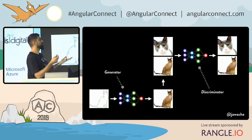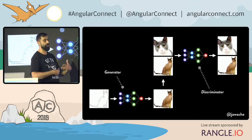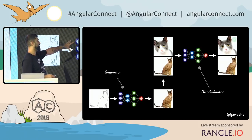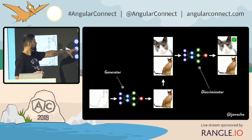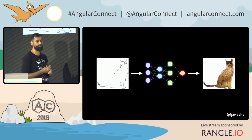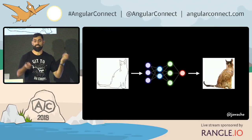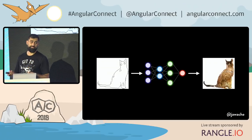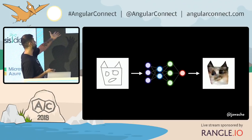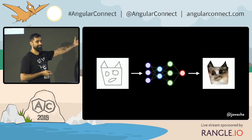And you keep doing that, over and over. The generator gets better and better at generating cat images. The discriminator gets better and better at discriminating real cats from fake ones. Eventually, the discriminator just can't tell anymore — and that's when you take the generator model, export it, and use it inside TensorFlow.js.